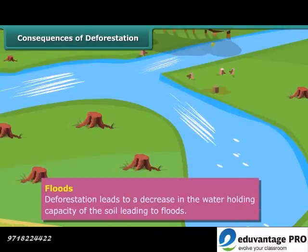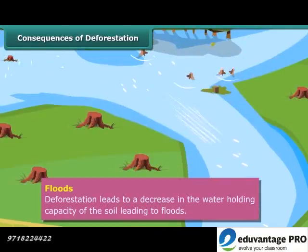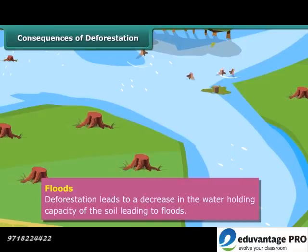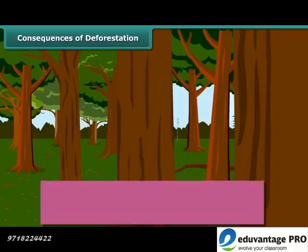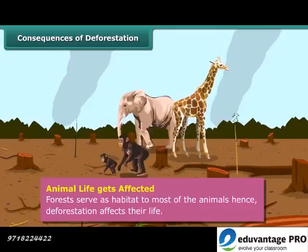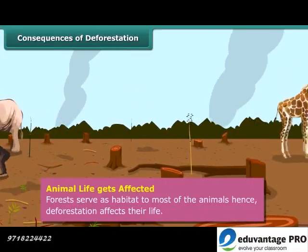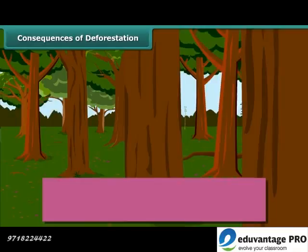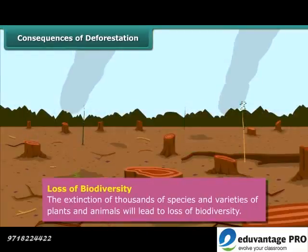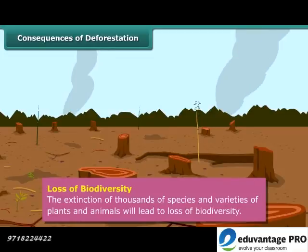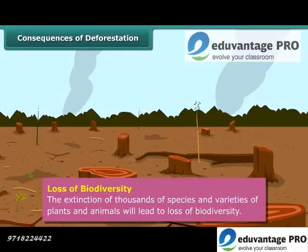Floods: deforestation also leads to a decrease in the water holding capacity of the soil. The movement of water from the soil surface into the ground is reduced, resulting in floods. Animals' life also gets affected, since forests serve as habitat to most of them.